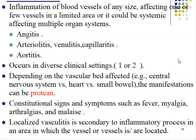Bismillah ar-Rahman ar-Rahim. We will start our lecture on vasculitis. Vasculitis is defined as inflammation of blood vessels of any size, affecting one or few vessels in a limited area, or could be systemic affecting multiple organ systems. It may result in arteriolitis, venulitis, capillaritis, and aortitis — the inflammation may involve small, medium, or large vessels.